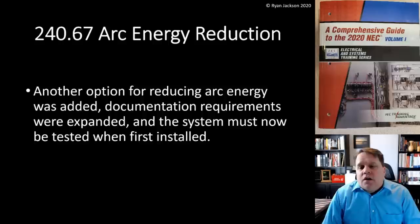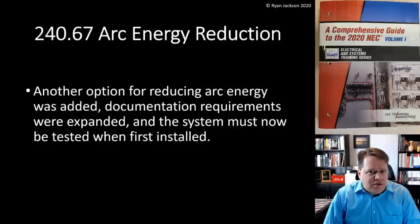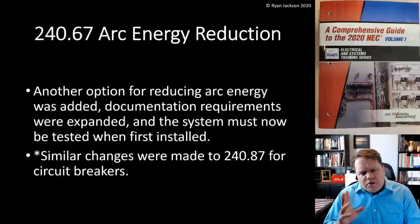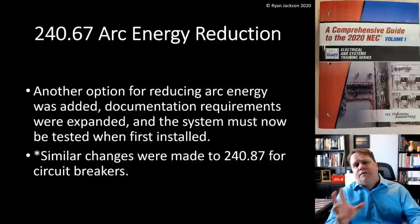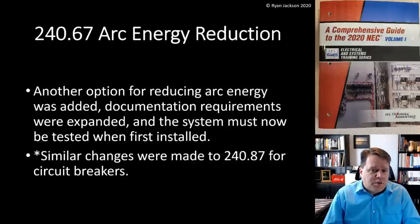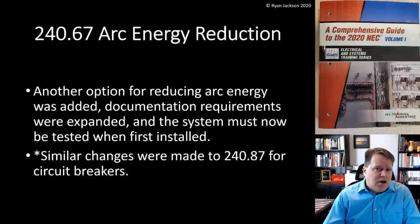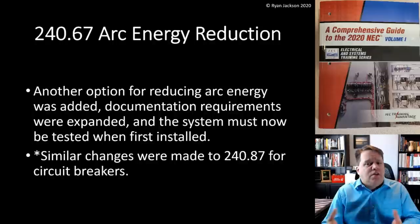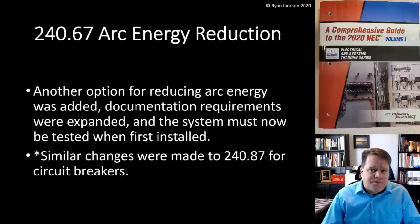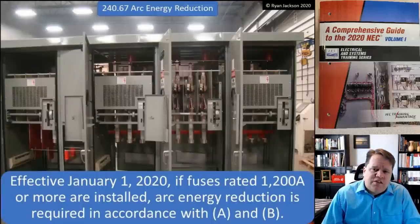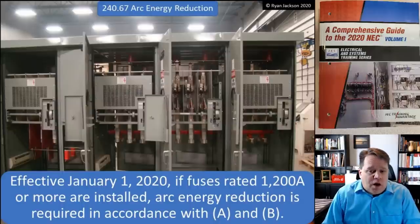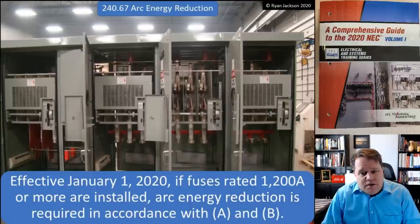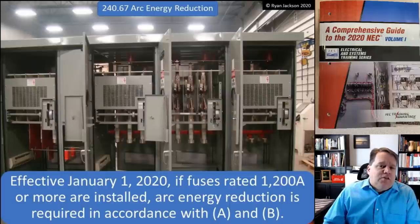Another change in Article 240 is to 240.67, Arc Energy Reduction. A new method for reducing arc energy was added, documentation requirements were expanded, and the system must now be tested when first installed. Note that 240.67 applies to fuses, while 240.87 has similar requirements for circuit breakers. The rule states: effective January 1, 2020, if fuses rated 1,200 amps or more are installed, arc energy reduction is required in accordance with items A and B.